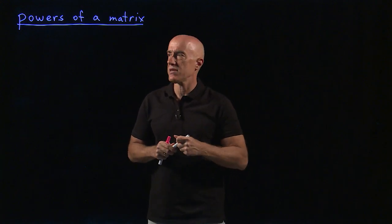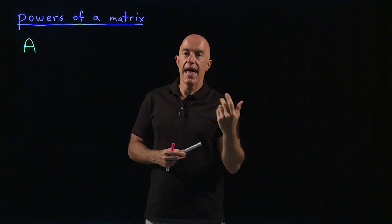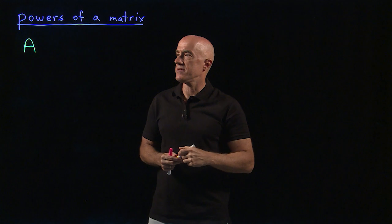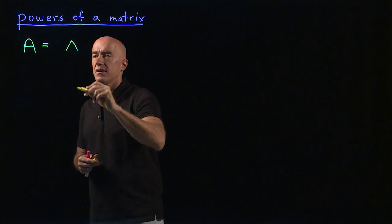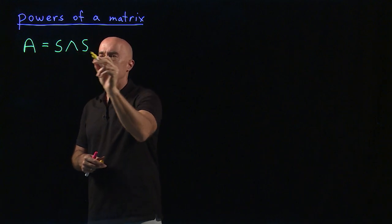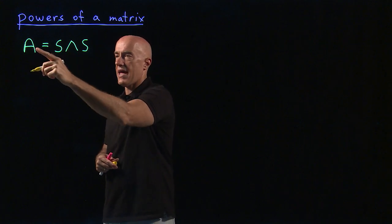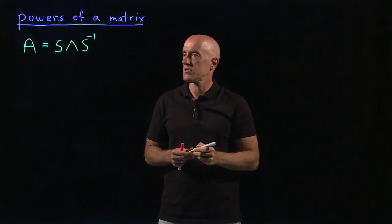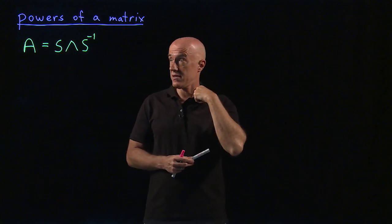We have some n by n matrix A, and we'll assume that it has n linearly independent eigenvectors so that we can diagonalize it. We can write A equal to the diagonal matrix, and on both sides we have the matrix of eigenvectors — but one of them is the inverse. Remember that S should multiply A on the right, so that side is the inverse matrix. Multiplying on the right by S gives AS equals S lambda.